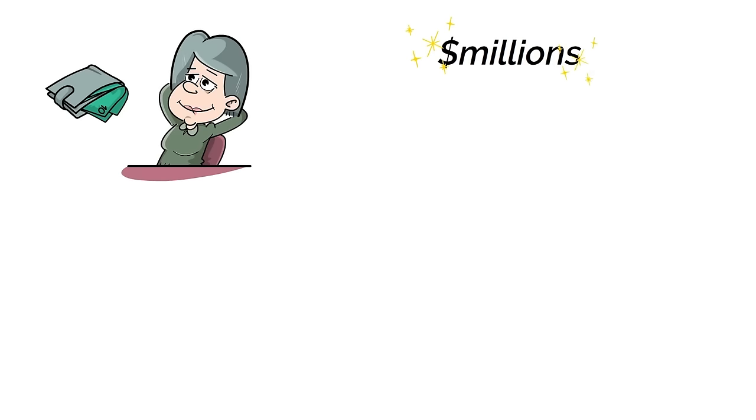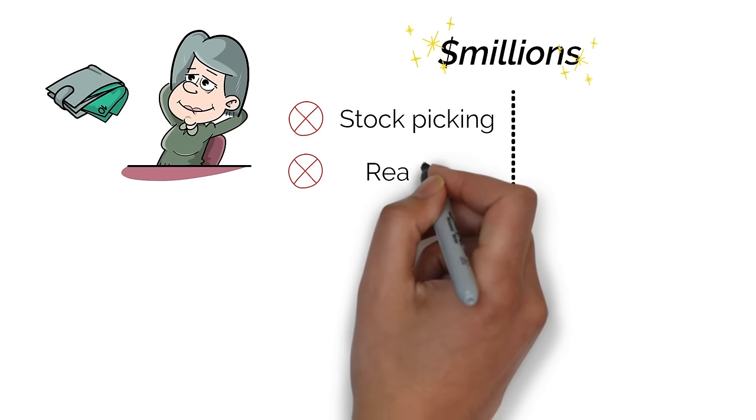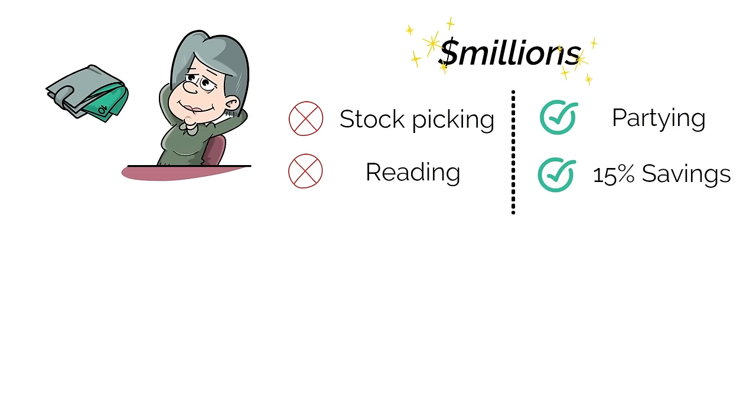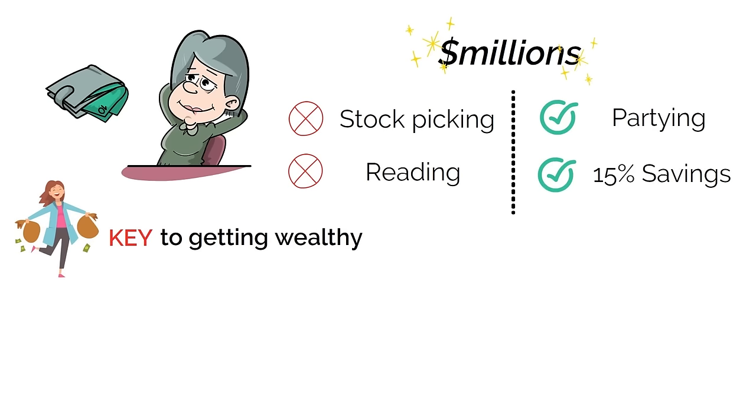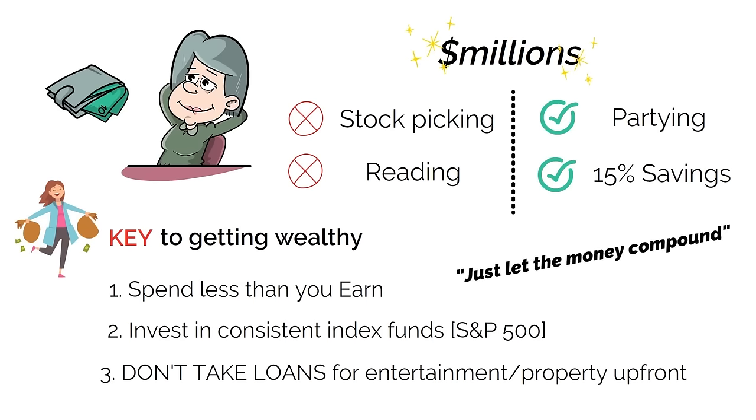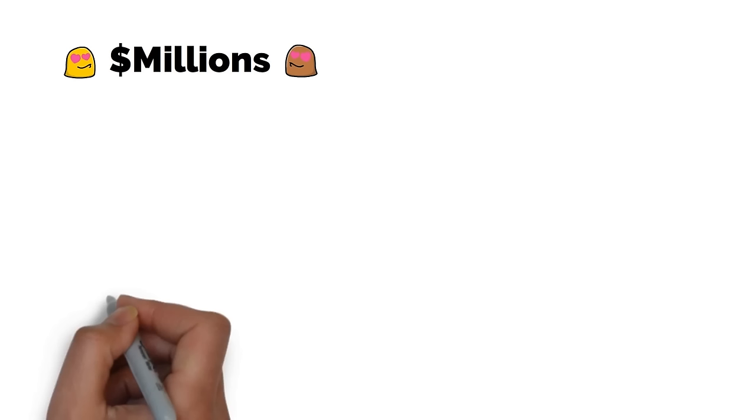The thing is that's with doing no stock picking, no reading, just party all the time, but just make sure that 15% gets saved. The key to getting wealthy is actually very simple: number one, spend less than you earn. Number two, put it into something consistent, some kind of S&P index or something like that. And number three, don't take loans against it and don't use it to go on vacation or down payment for your house. Just let this go and it's amazing what those numbers will end up being.